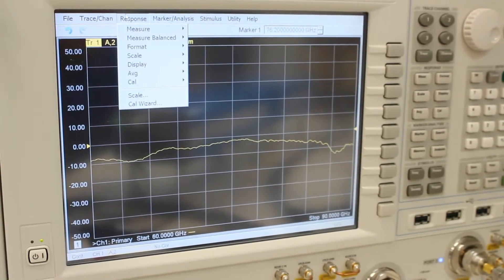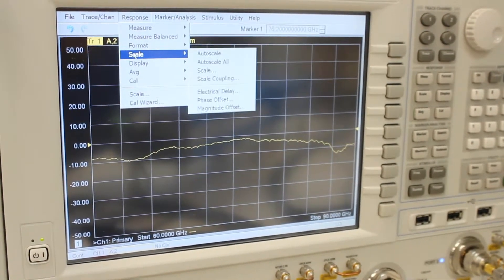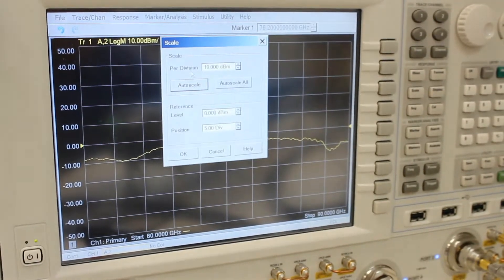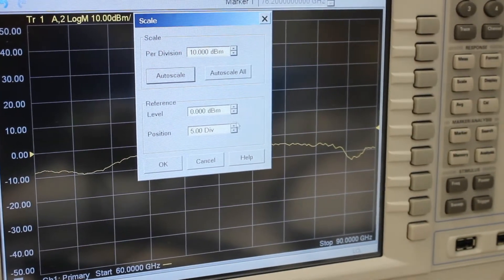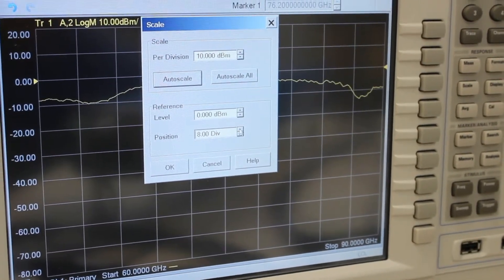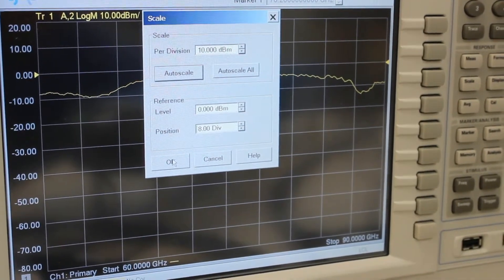You will then need to rescale the chart. Select Response, then Scale. Under the Scale tab, move the reference position to a higher scale in order to better view the response. We used the 8th Division.